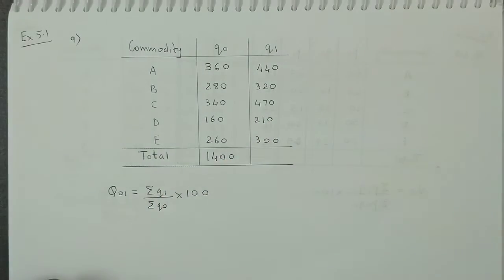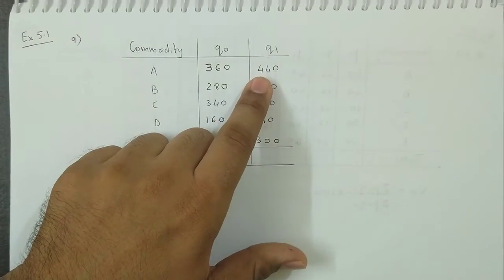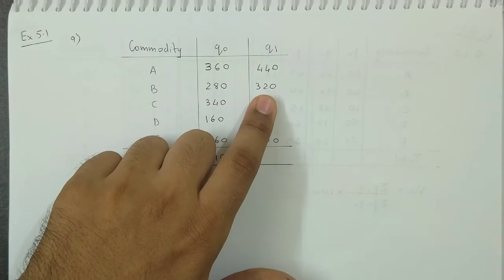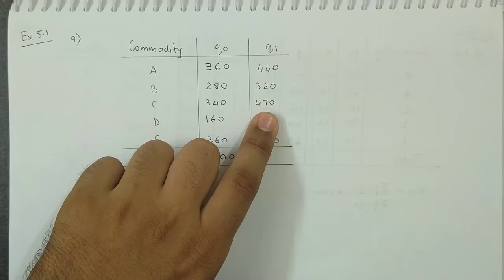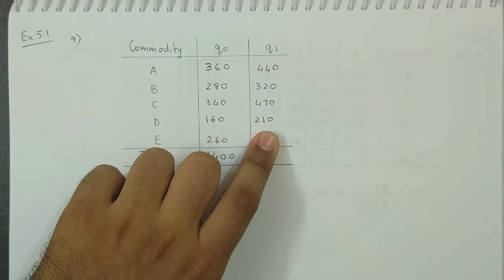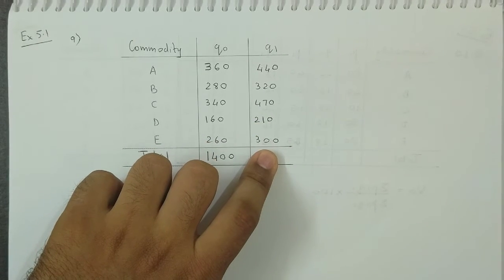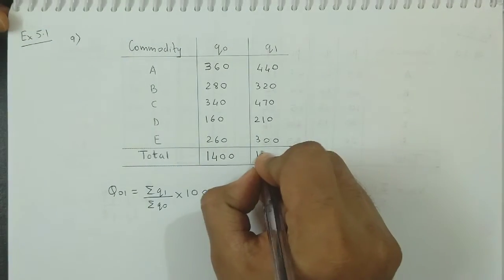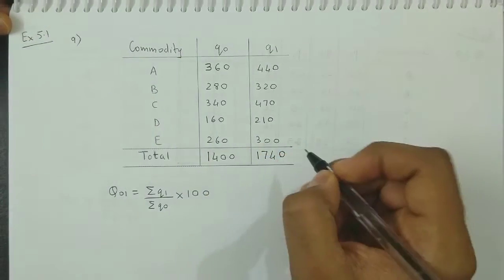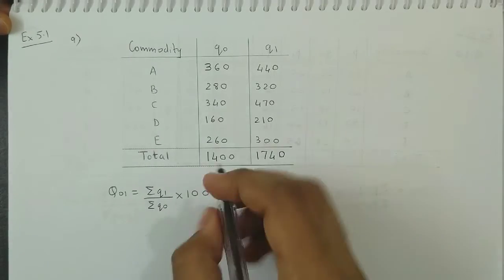Now Q1 total is 440 plus 320 plus 470 plus 210 plus 300. So this total is 1,740. Now we substitute here.